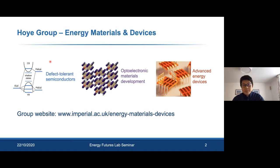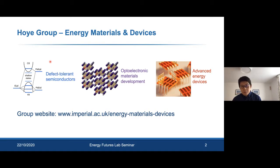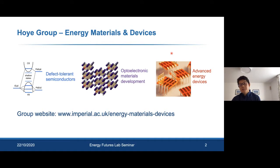We work on defect tolerant semiconductors — materials that can achieve low non-radiative recombination rates despite high densities of defects — meaning you can make materials that are efficient even when fabricated using simple and cheap growth methods. We also work on developing scalable methods to synthesize novel materials, specializing in solution and vapor-based growth methods, and we work on applying these materials into devices. Today's talk will cover our work on photovoltaics, but we also work on tandem solar cells, light emitting diodes, and a range of other devices.